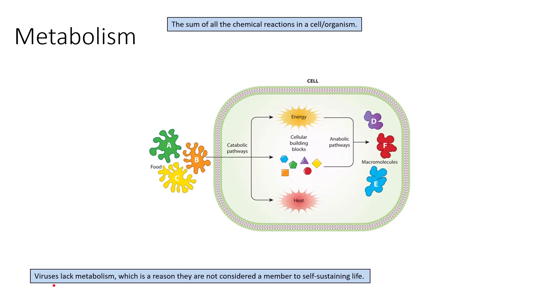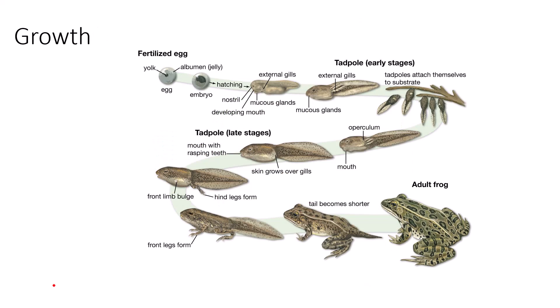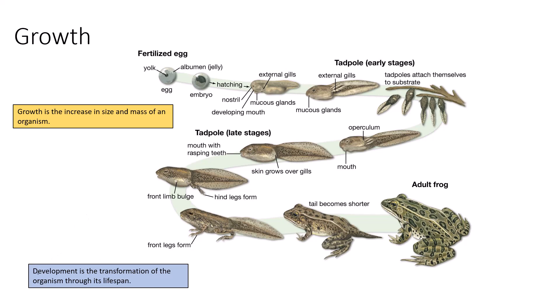Growth is the ability to increase in size and mass of an organism, and is often paired with development. Development is the transformation of the organism through its lifespan. Looking at the life cycle of a leopard frog, we see the cell starts off very small and produces a variety of different intermediate body stages on its way to adulthood. That frog physically gets bigger as the life cycle progresses, so growth is evident.